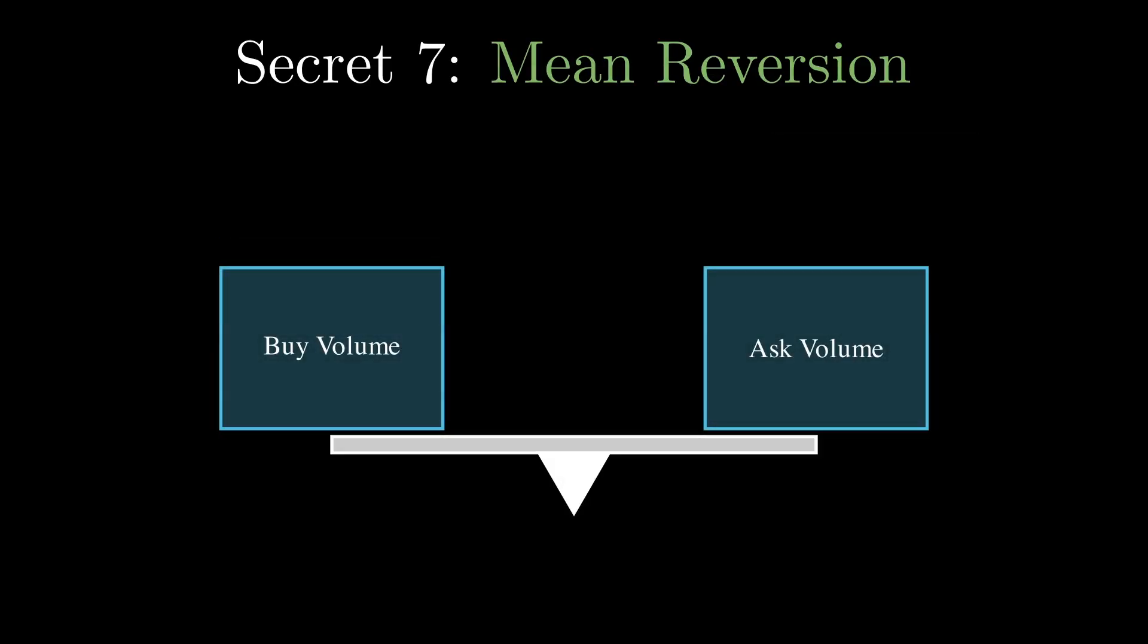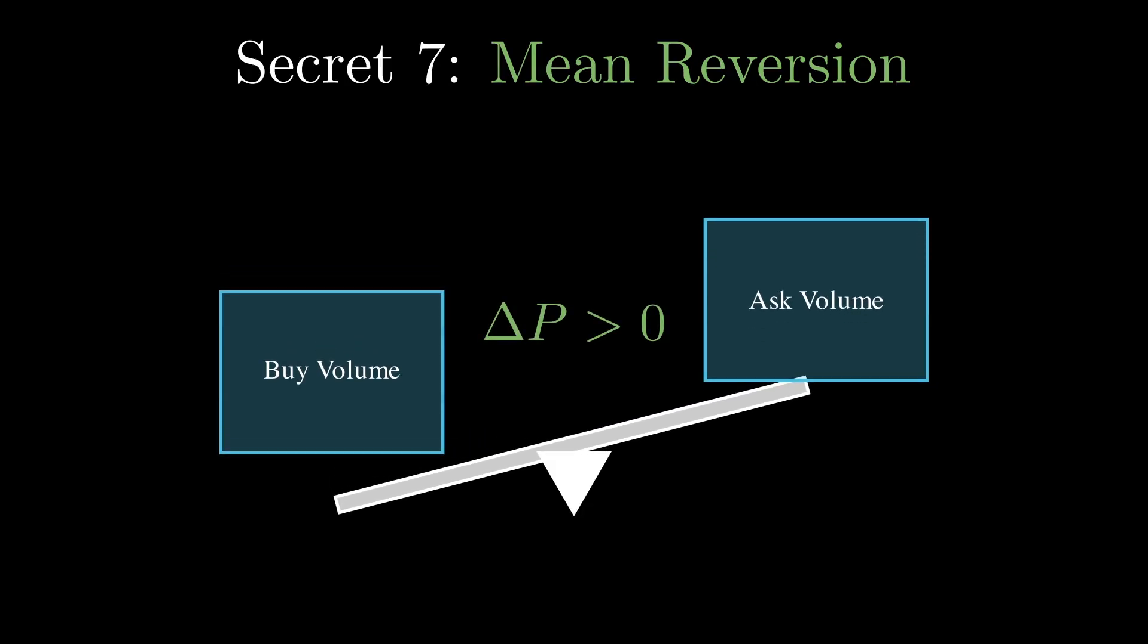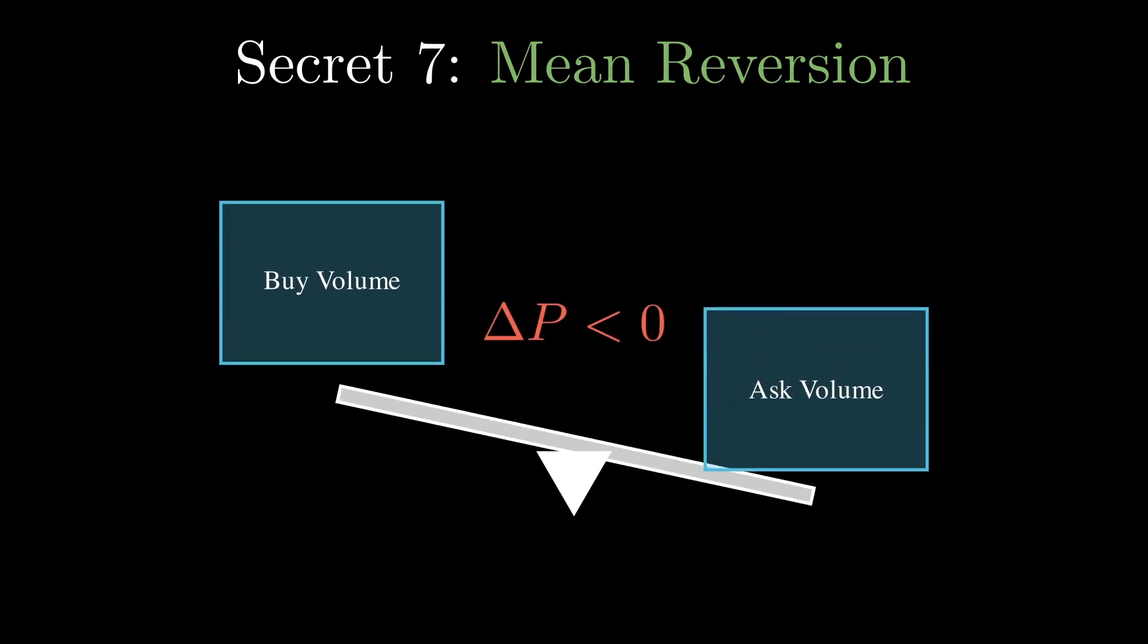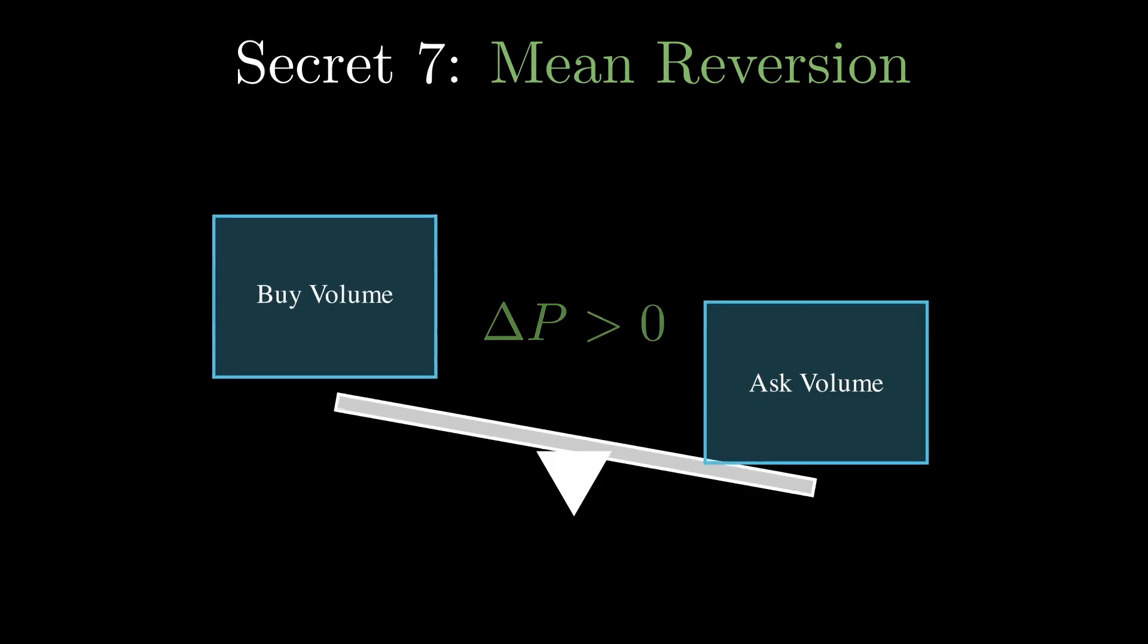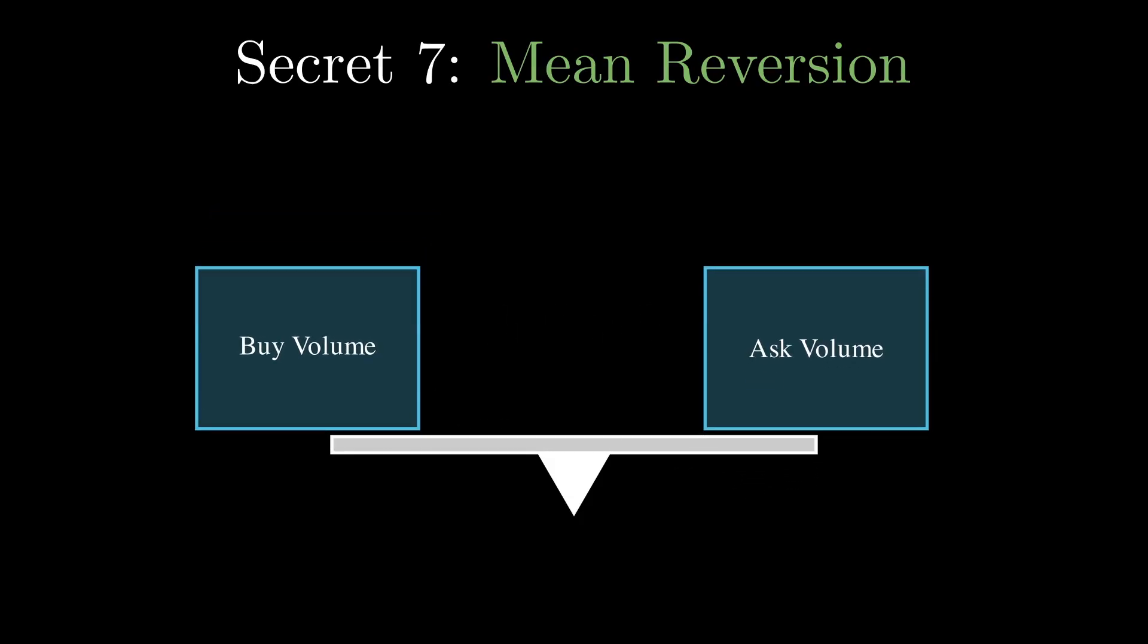Visualize the imbalance like a seesaw. If buying pressure exceeds the liquidity on the book, the price moves up, but a bigger imbalance can actually increase the chance the price will drop in the next few days. Conversely, if selling pressure on the book exceeds buying, the price moves down, which could signal reversion in the next few days. The greater the imbalance, the more likely the price is to revert over the next few days.